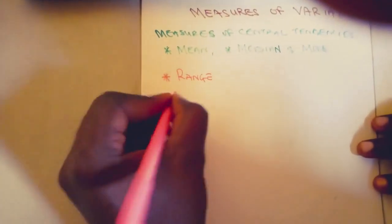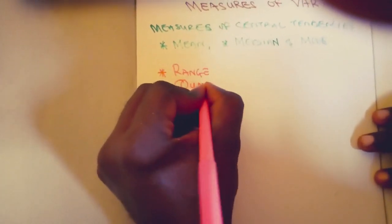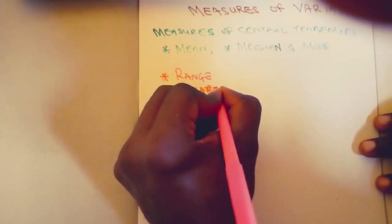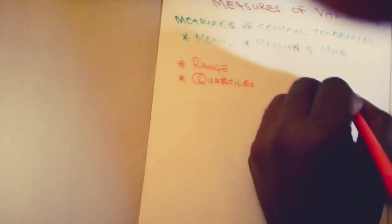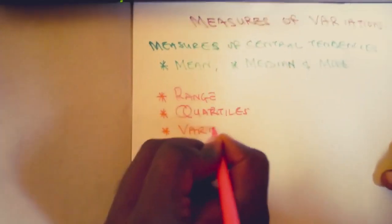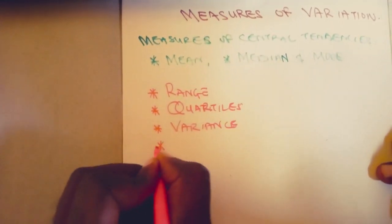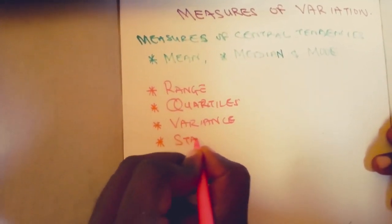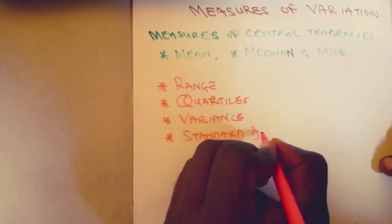The various types of measures of variation we're going to be looking at include range, quartiles, interquartile ranges, variance, and of course standard deviation.